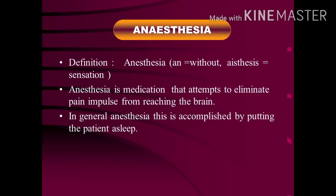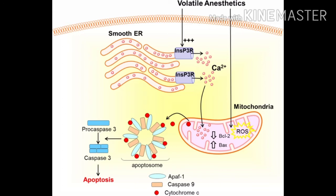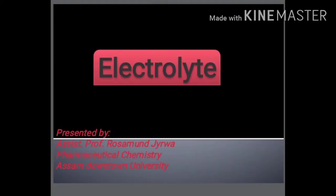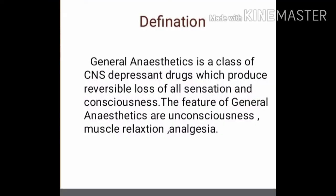Many central nervous system depressants such as analgesics, sedatives and hypnotics, anticonvulsants, and skeletal muscle relaxants are included. Although various mechanisms of action are attributed to these agents, ultimately they all produce their anesthetic action by interfering with conduction in sensory neurons and sometimes motor neurons. Now let's look at what we understand by general anesthetics.